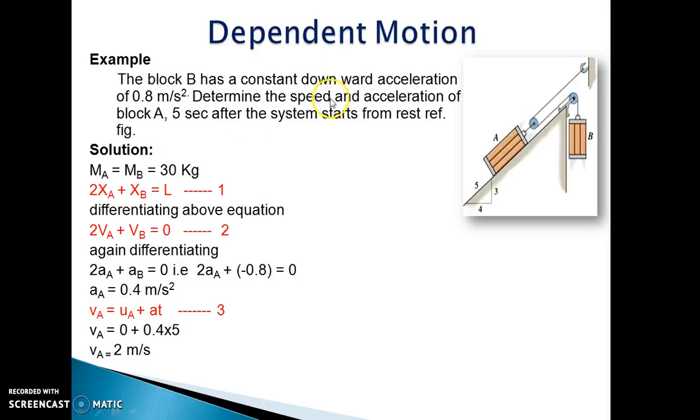Now we are interested to find out speed of block A. So we have uniform acceleration equation VA equal to UA plus A times T, where VA is the final velocity, UA is the initial velocity, A is the acceleration of block A, and T is time taken. So as we know the block A is starting from rest, its initial velocity is zero. Acceleration we have found out, that is 0.4. So substituting that in the equation and multiplying it by the time, we get the velocity for A, that is equal to 2 m/s.